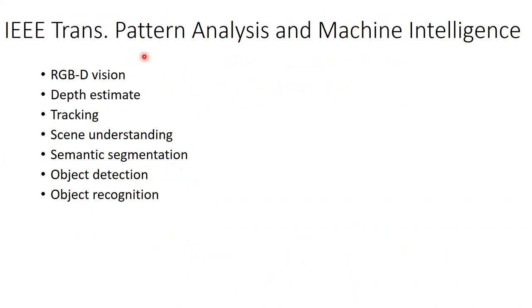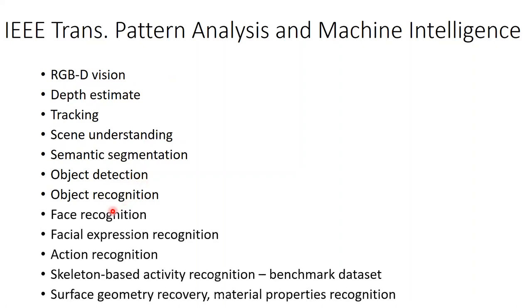PAMI also covers action recognition, skeleton-based surface geometry, biometric recognition including fingerprint and gait, and recently — just two months ago — a paper from Hong Kong on finger knuckle patterns as a biometric. This research has been going on for a few years, but at PAMI this year it was published by an IEEE Fellow who introduced and formalized this work. Person re-identification, defocused blur detection, pose estimation, landmark localization, saliency clustering, and many aspects of pattern recognition and machine learning are published in PAMI.